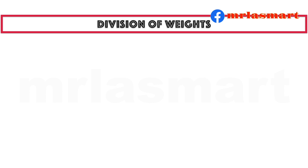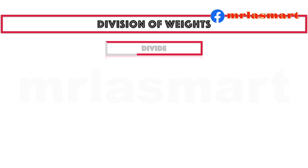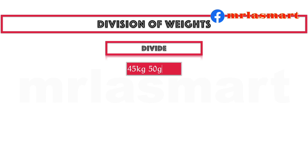Division of weights. Divide 45 kilograms 50 grams by 5.